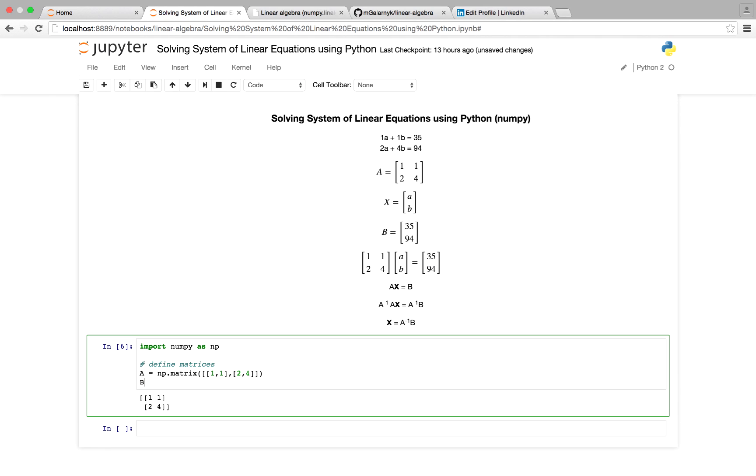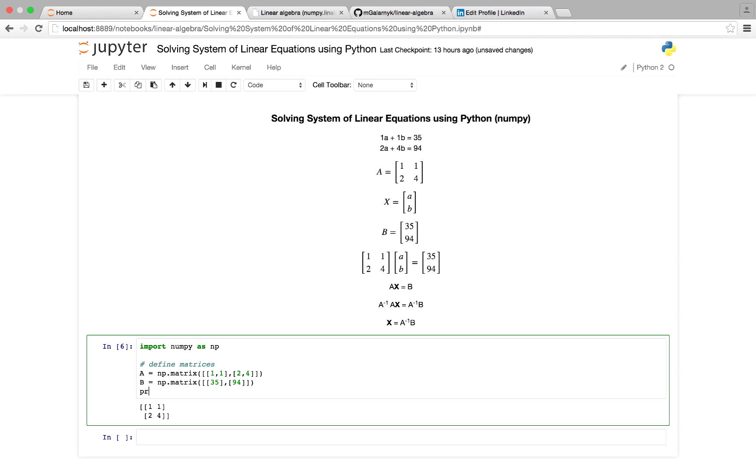And entering in matrix B, we have np.matrix. And going across the first row of B, we have 35. And in the second row, we have 94. And I'm going to print that out just to check.